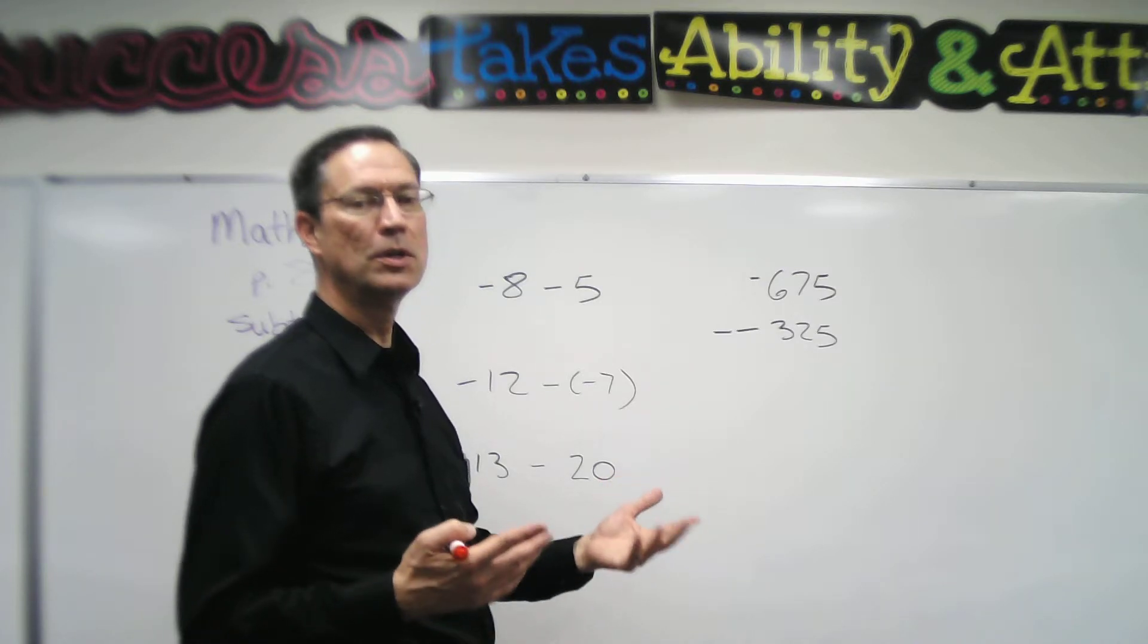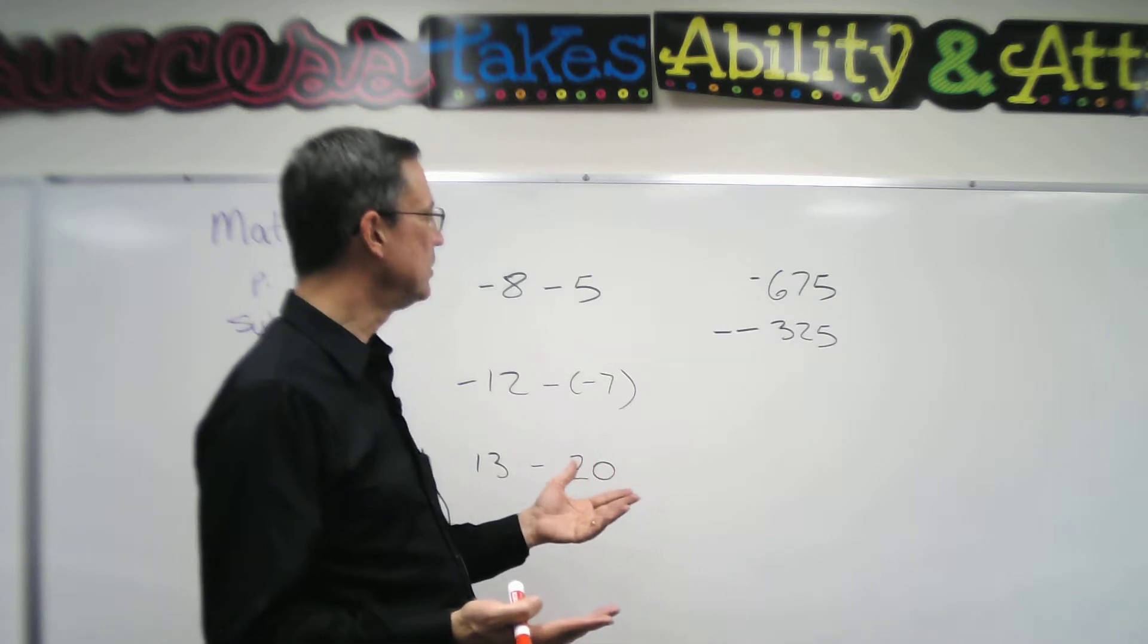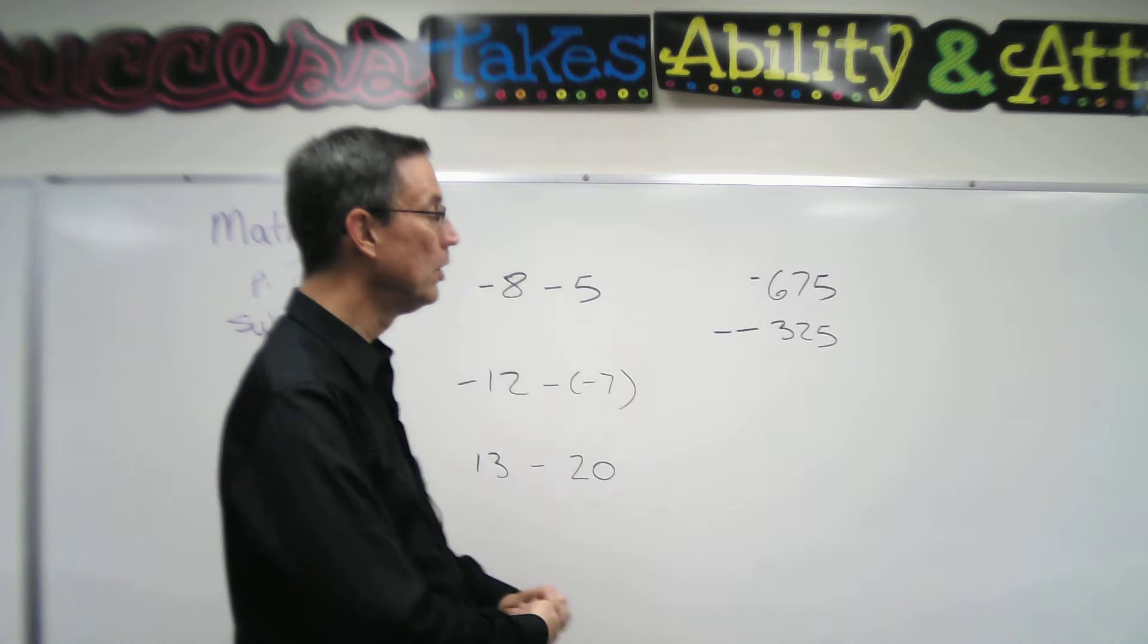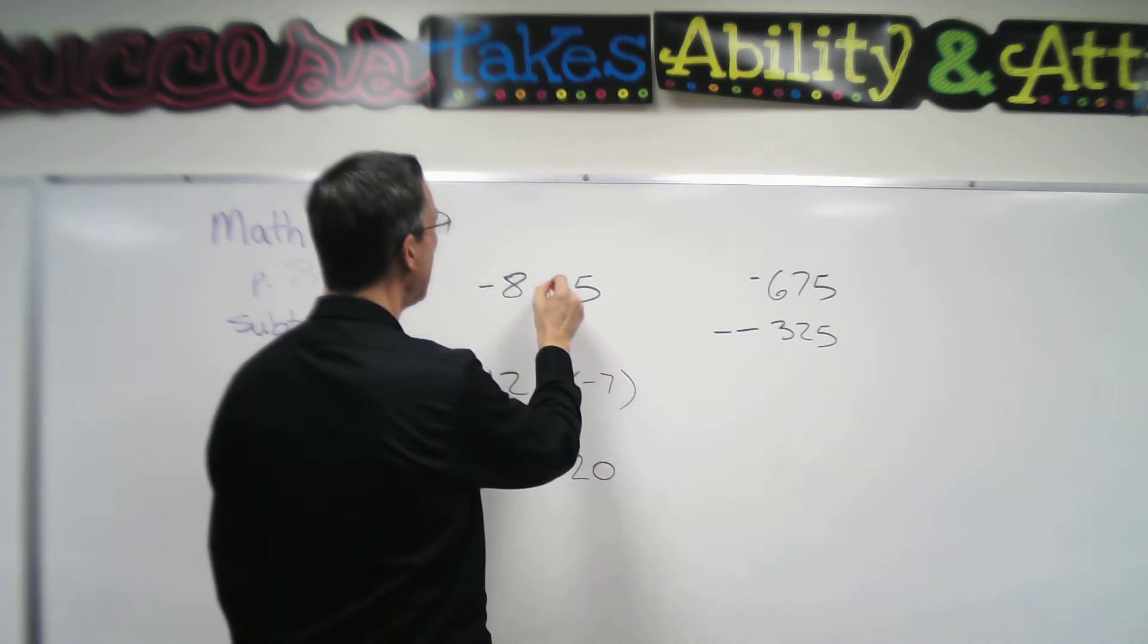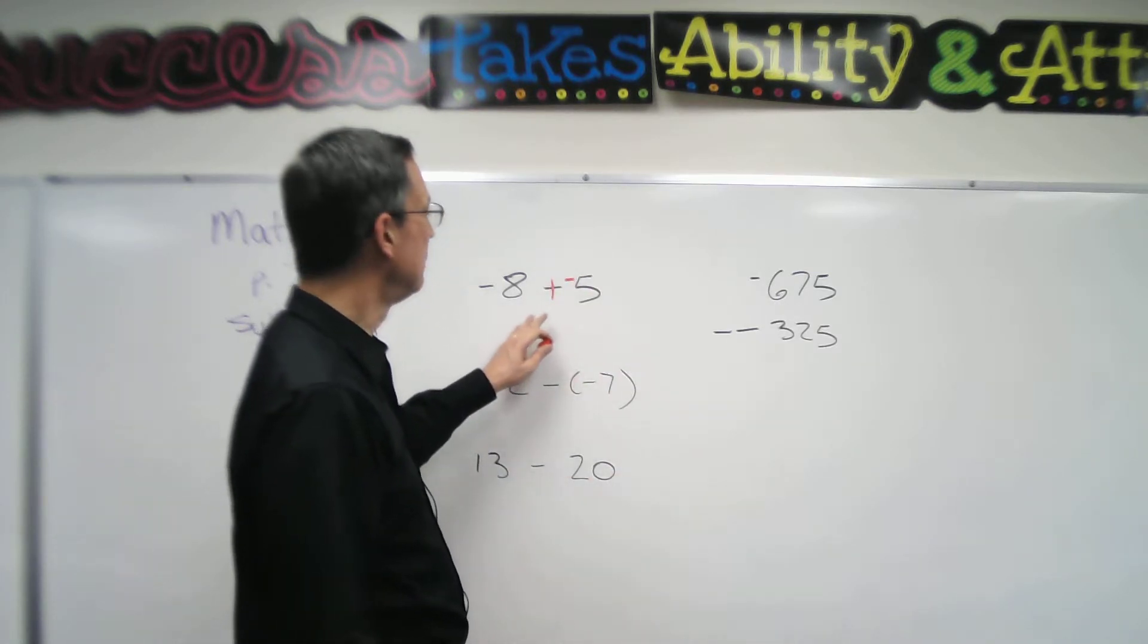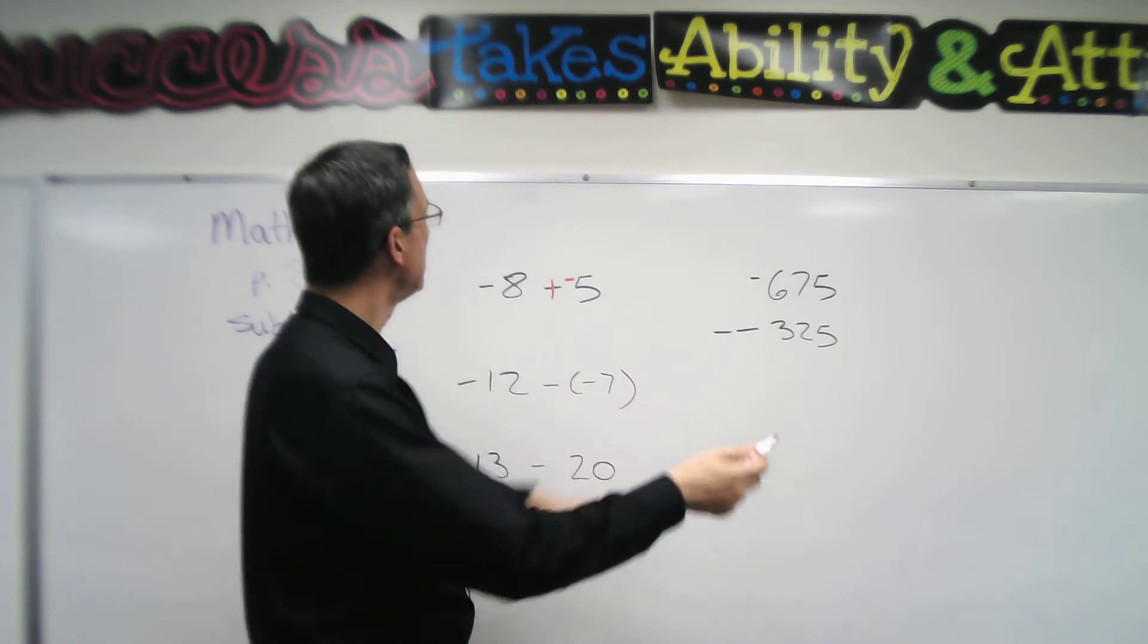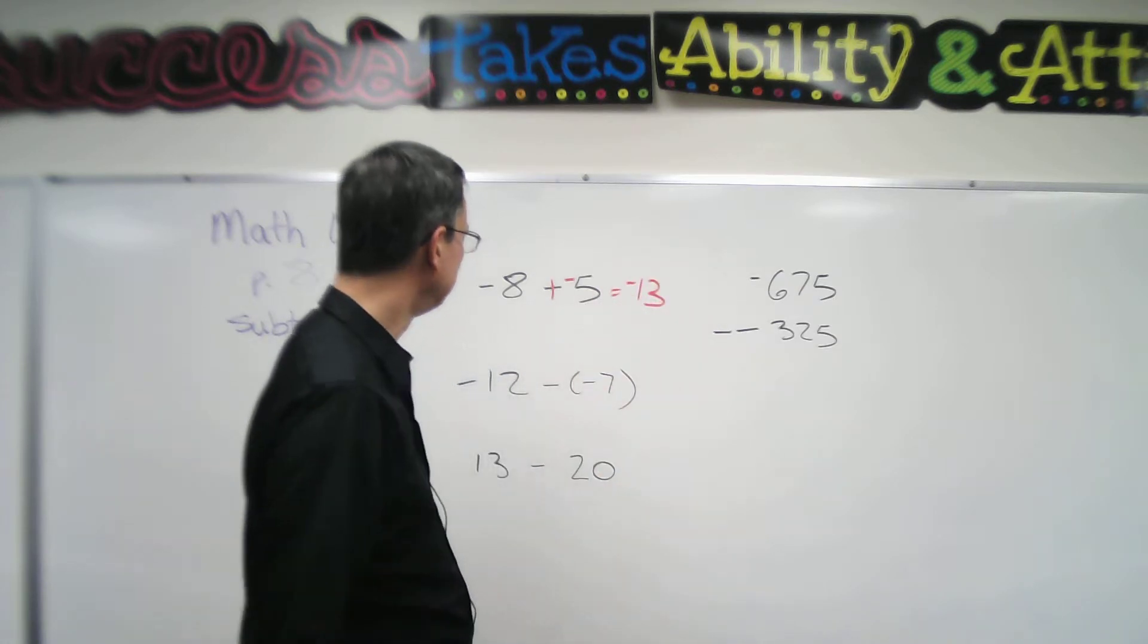All right, then you think about the addition rules. Sometimes you just add and keep the common sign. Other times we subtract the smaller from the larger, keep the sign of the larger. I'm going to change this first one here to addition and change the second number to its opposite. So I have negative 8 plus negative 5, which is negative 13. We add and keep the common sign.